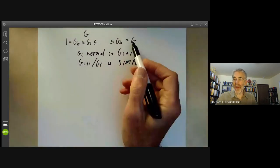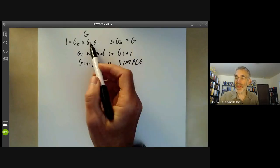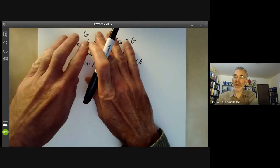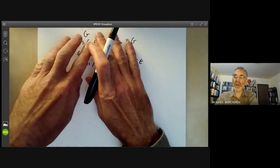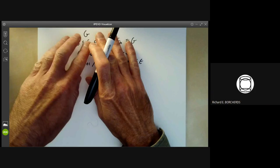And this is quite easy because if G is simple, we're done. If it doesn't, we pick a normal subgroup to be one of these groups Gi, and then we just continue applying this to the normal subgroup and the quotient by the normal subgroup. So this is called a composition series.